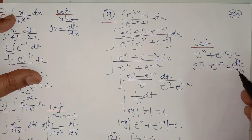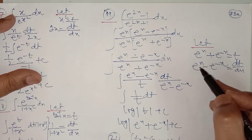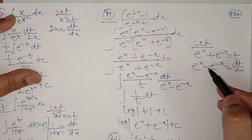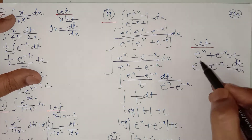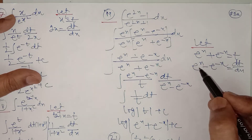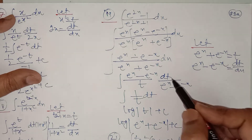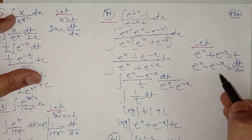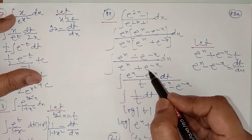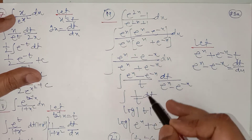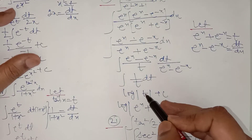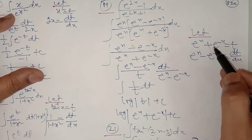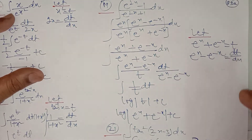Now you can let e to the power x plus e to the power minus x equal to t. So dt upon dx will be equal to e to the power x minus e to the power minus x (since e to the power minus x times minus 1), and dx will equal dt upon (e to the power x minus e to the power minus x). Replace the value of dx; this cancels out the numerator. So it will be only 1 upon t, whose integration is log of mod t plus c. Replace the value of t which is e to the power x plus e to the power minus x.